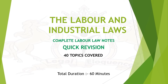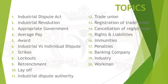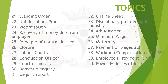Today we will cover the following topics: Industrial Dispute Act, Industrial Revolution, Appropriate Government, Average Pay, Award, Industrial vs Individual Dispute, Strikes, Lockouts, Retrenchment, Layoff, Industrial Dispute Authority, Trade Union, Registration of Trade Union, Cancellation of Registration, Rights and Liabilities, Immunities, Penalties, Banking Company, Industry, Workman, Standing Order, Unfair Labor Practice, Victimization, Recovery of Money Due from Employer, Principle of Natural Justice, Closure, Labor Courts, Conciliation Registration Officer, Court of Inquiry, Domestic Inquiry, Inquiry Report, Charge Sheet, Disciplinary Proceeding in Industry, Adjudication, Minimum Wages, Maternity, Payment of Wages Act, Workman Compensation Act 1923, Employees Provident Fund, and Powers and Duties of Inspector.